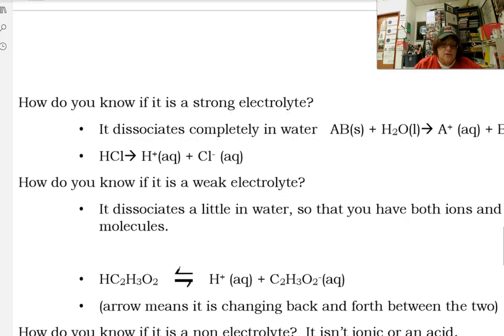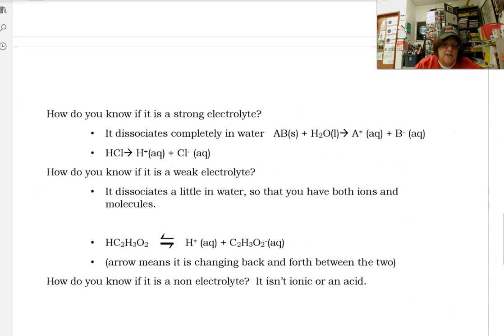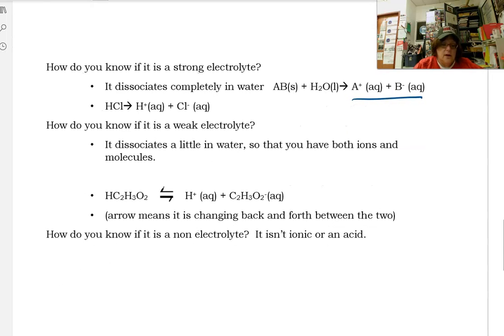How do you know if it's a strong electrolyte? It dissociates completely. You're going to have only ion species. How do you know if it's a weak electrolyte? It dissociates a little bit. So you have both ions and molecules. You're going to see the molecule and you're going to see the ions. And we use that little goofy arrow.